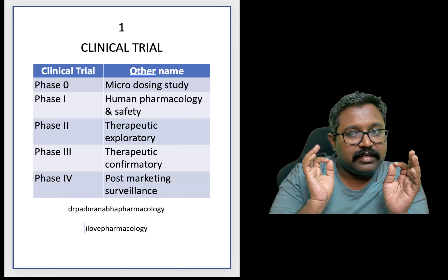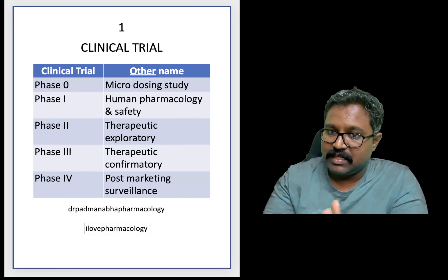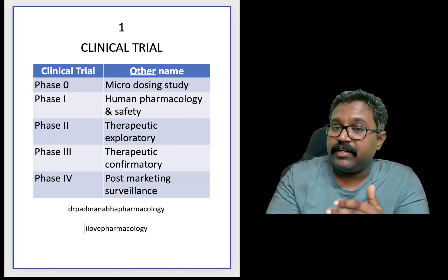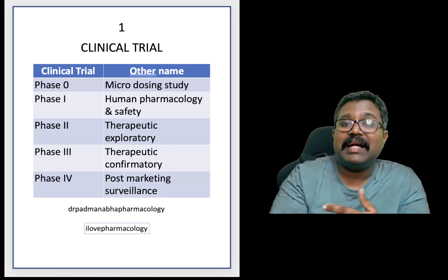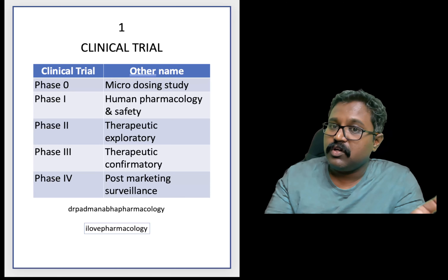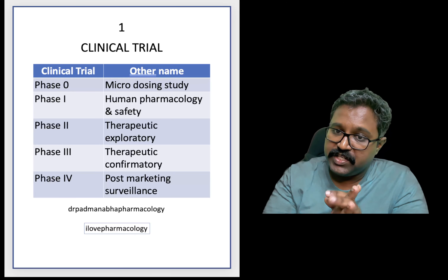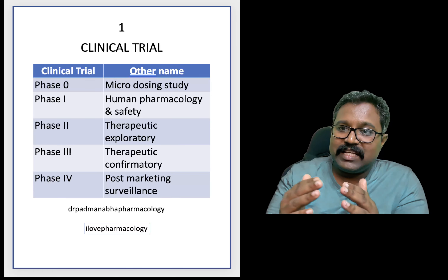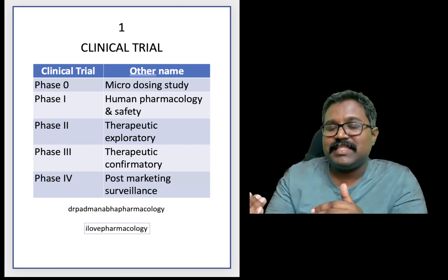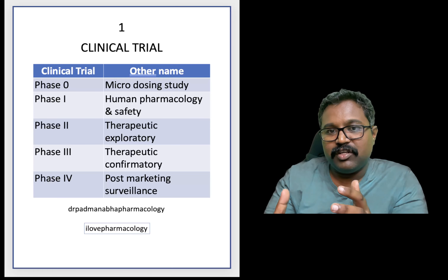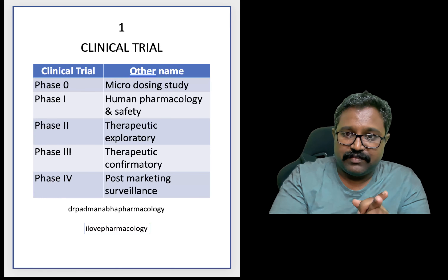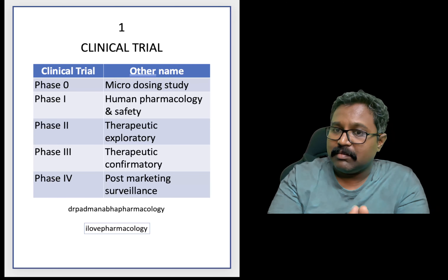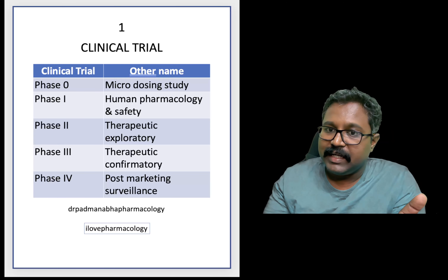Once therapeutic exploration is established, it will be taken further into phase 3, where there will be multicentric trials. A large group of patients will be involved and it is therapeutic confirmatory. Phase 3 will confirm the therapeutic efficacy of the drug in a larger population, in a larger setting, in a completely double-blinded setup.